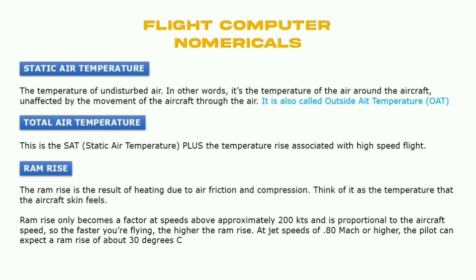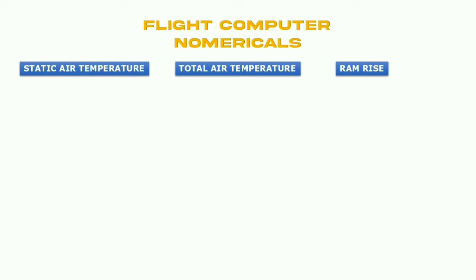Ram rise only becomes a factor at speeds above approximately 200 knots, and it is proportional to aircraft speed — the faster you are flying, the higher the ram rise. At jet speeds of Mach 0.80 or higher, the pilot can expect a ram rise of above 30 degrees Celsius. We'll see in the diagram: static air temperature, total air temperature, and ram rise.